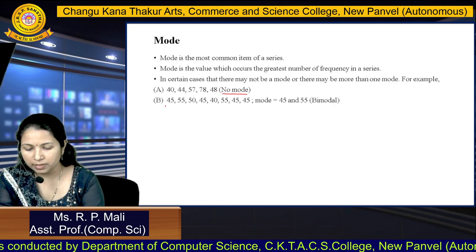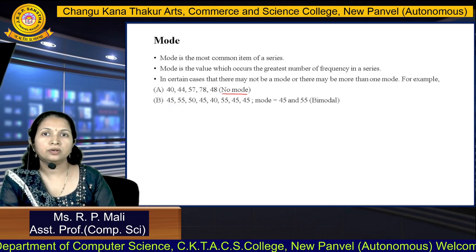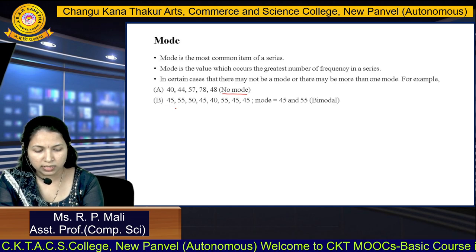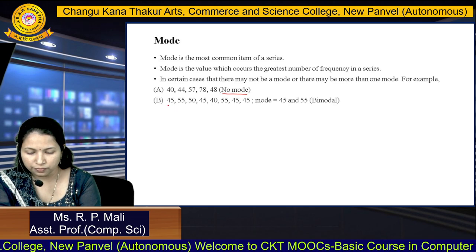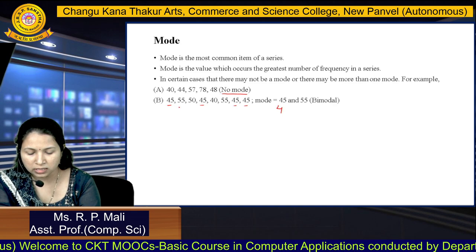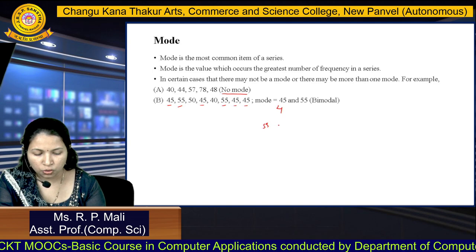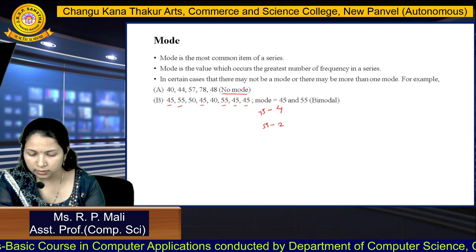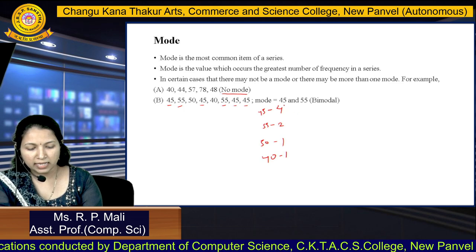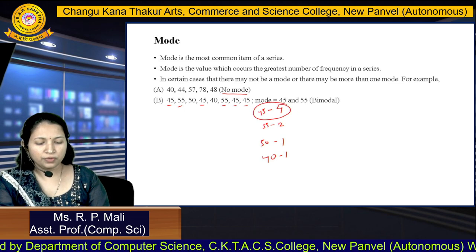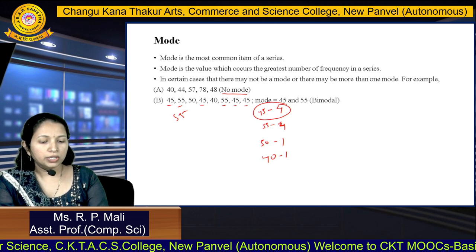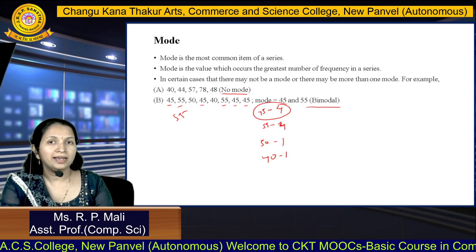In the next example, the values are 45, 55, 50, 45, 40, 55, 45, 45. Here, 45 occurs 4 times, 55 occurs 2 times, while 50 and 40 occur only once each. So 45 is the mode. If two values appeared the same number of times, the series would be called bimodal — meaning it has two modes.